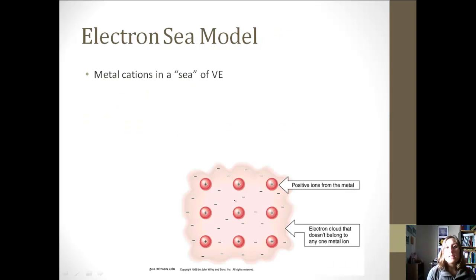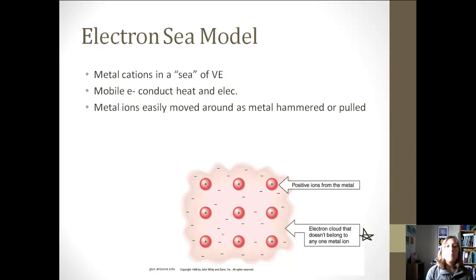A better way to describe this is to use the electron sea model. Basically, we have these metal cations, remember those are positive, in a sea of valence electrons. And so these valence electrons don't really belong to any one metal ion. They're just kind of all floating around with the positive ions from the metal. So the mobile electrons are what are conducting your heat and electricity, and the metal ions are easily moved around because they're just in the sea of electrons, so we can move them a lot. They're just really hard to separate.